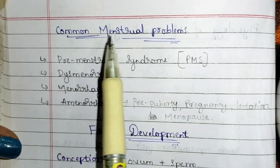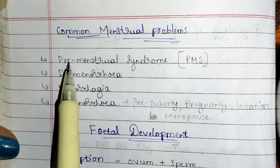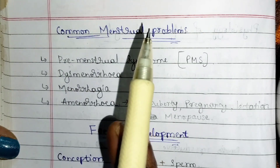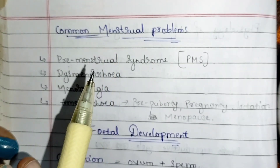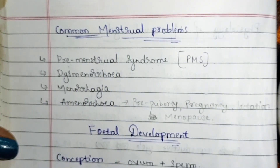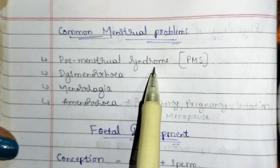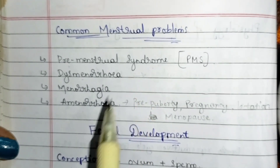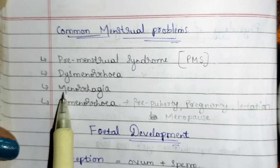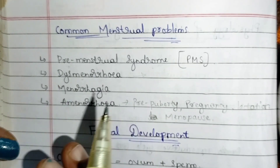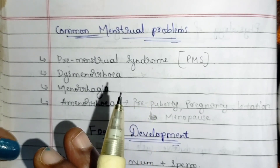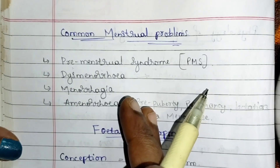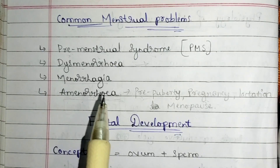Common menstrual problems include: first, premenstrual syndrome (PMS) — before getting their periods, women experience symptoms like backache, vomiting sensation, fatigue, tiredness, and headache, indicating that their period is coming. Next is dysmenorrhea — painful menstruation — where there is a lot of pain in the abdominal and pelvic region during menstruation. Menorrhagia means heavy bleeding; if bleeding occurs for more than seven to ten days, it is considered heavy bleeding and requires immediate medical attention, as there is a risk of becoming anemic.